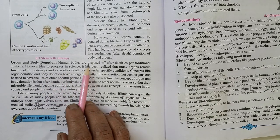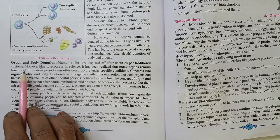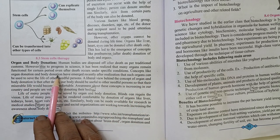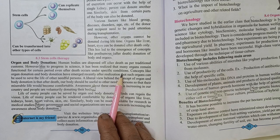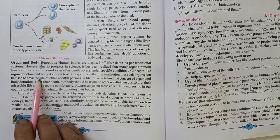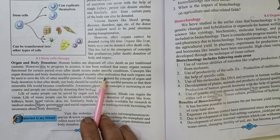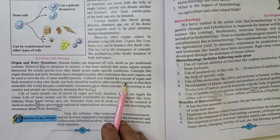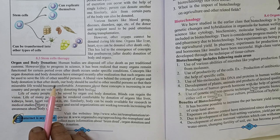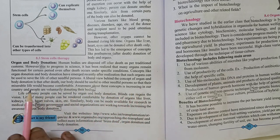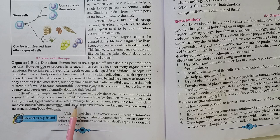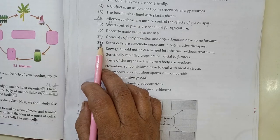Question 37: Give reason — concepts of body donation and organ donation have come forward. Page 90 — Due to progress in science, it has been realized that many organs remain functional for a certain period even after death under specific conditions. Concepts like organ donation and body donation have emerged after realizing that such organs can be used to save the lives of needful persons. Awareness is increasing and people are voluntarily donating their bodies.